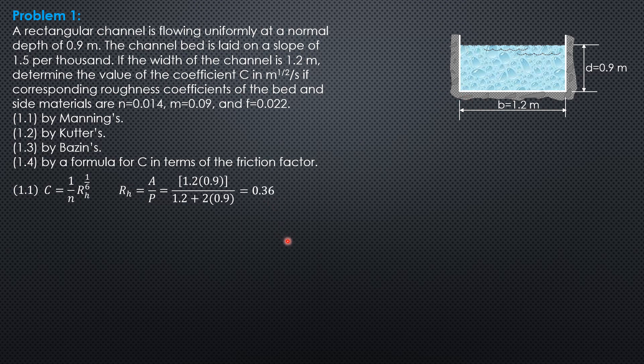So the hydraulic radius is 0.36 meter. Substitute into the formula, 1 over 0.014 times 0.36 to the 1.6. So Manning's C is 60.25 meter to the 1.2 per second.